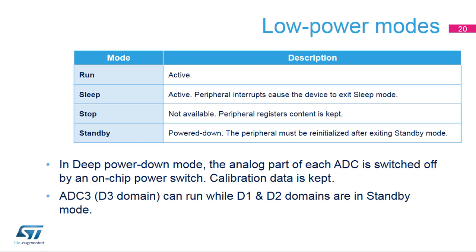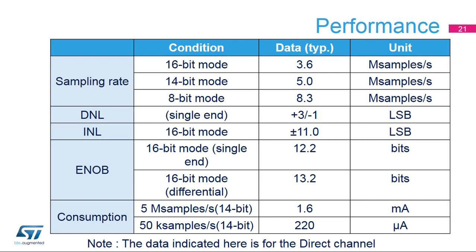ADC3, located in the D3 domain, can run while other domains are in standby mode. The following table shows performance parameters for the ADC; all values are preliminary. The ENOB of 16-bit mode is saturated at less than 14 bits due to the noise level of the system. By using oversample mode, the ENOB can be extended further.